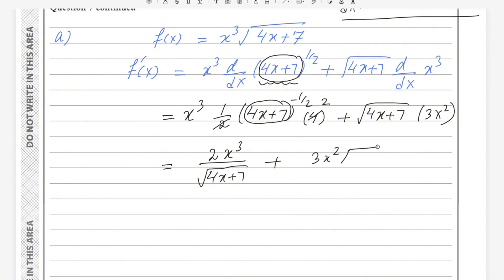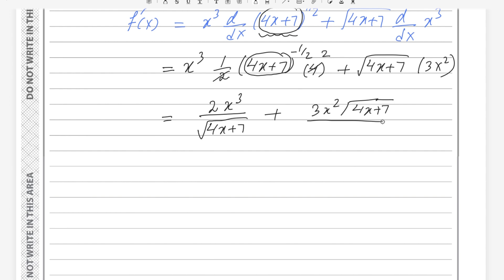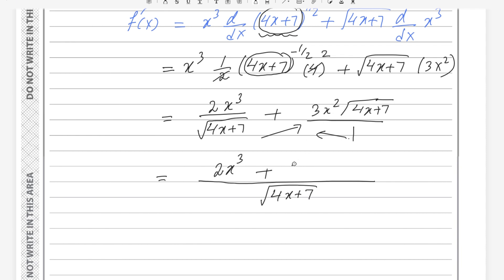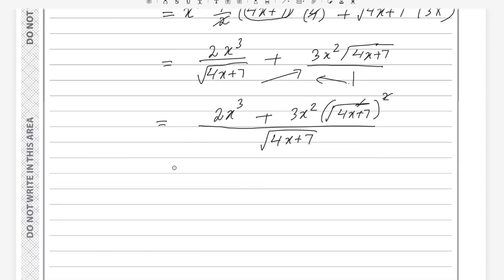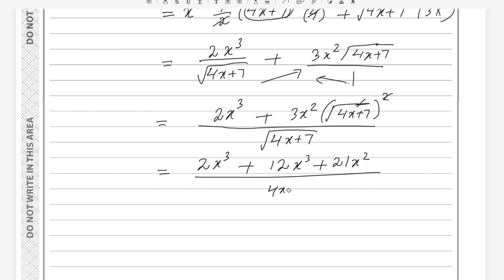Now we take the LCM of the two fractions. The common denominator is the square root of (4x + 7). Combining gives us (2x³ + 3x² × (4x + 7)) divided by the square root of (4x + 7). When (4x + 7)^(1/2) multiplies (4x + 7)^(1/2), the square and square root cancel, expanding the bracket gives 12x³ + 21x².